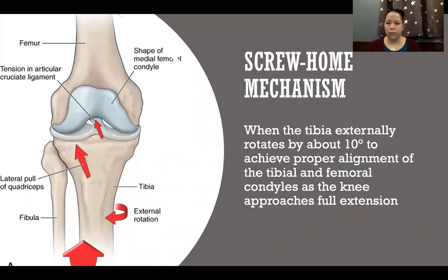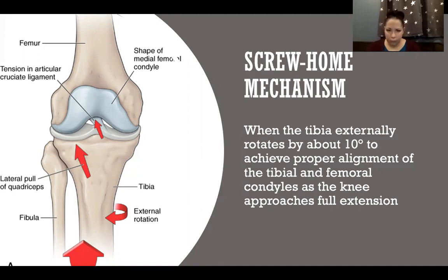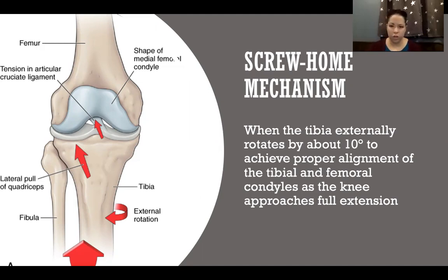The screw home mechanism is an interesting function of the knee. When the knee is in flexion and beginning to extend, as it approaches full extension, the tibia must externally rotate by about 10 degrees for the condyles of the femur and tibia to line up correctly — that's the screw home mechanism. It's the normal function of the knee: in flexion, as we approach full extension, the tibia rotates 10 degrees for the condyles to align.